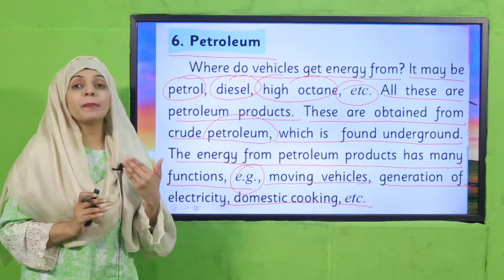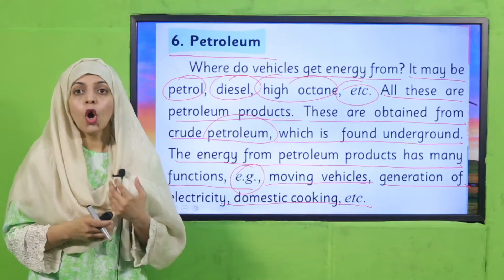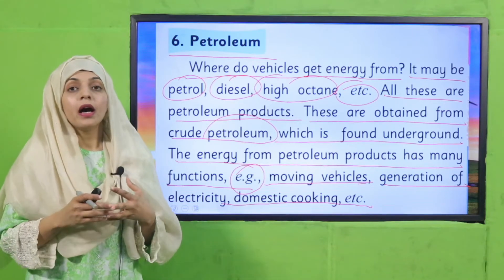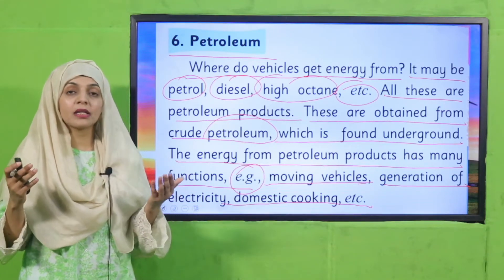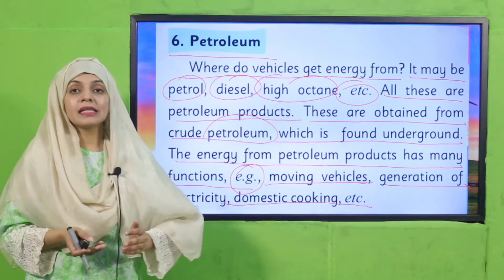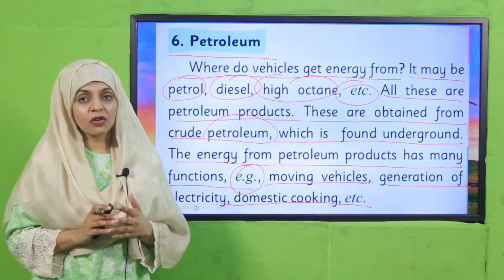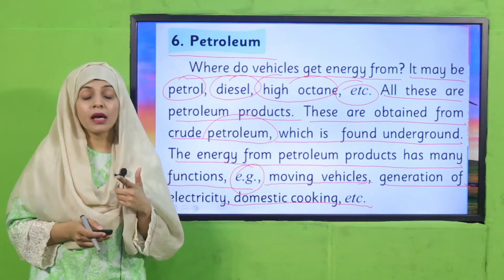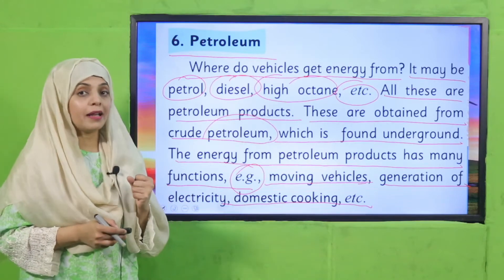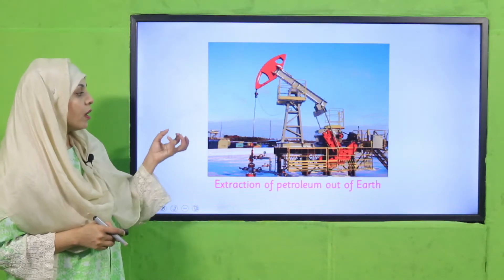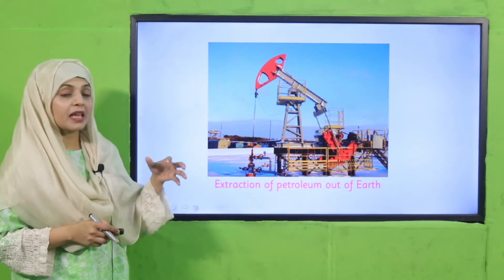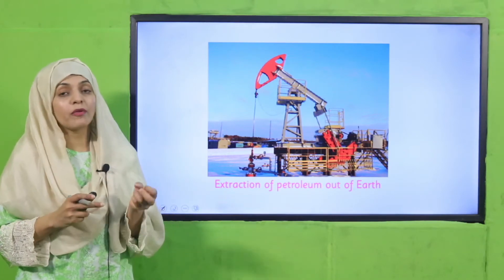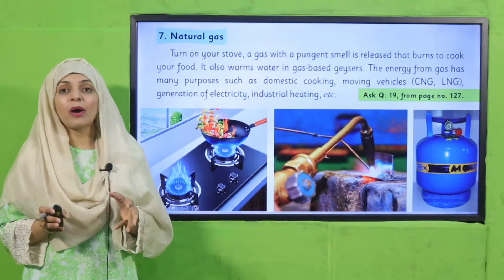Petroleum ek natural source hai aur isko zameen se hasil kiya jata hai in the form of crude oil. Phir isse petrol, diesel, high octane paida ki jati hai, jo gariyon mein aur buses mein istamal kiya jata hai for energy production. Petroleum se electricity bhi generate ki jati hai jo industries mein aur gharon mein istamal hoti hai, lekin ye ek mehenga tarika hai. Zameen ke neeche se heavy machinery se petroleum ko extract kiya jata hai.